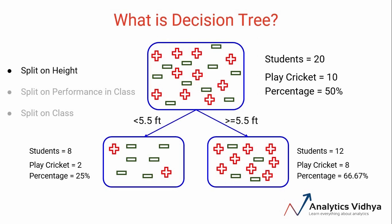After this split, let's say we got this distribution. There are 8 students who are below 5.5 feet and out of those 8 students only 2 are actually playing cricket. Hence the percentage of students who are below 5.5 feet in height and play cricket is 25 percent, and I can say that 75 percent of people who are below 5.5 feet do not play cricket.